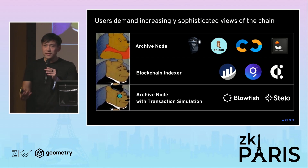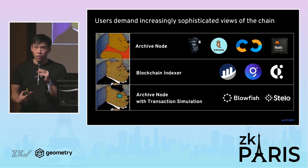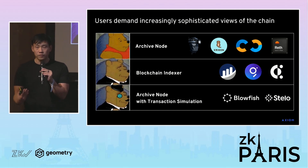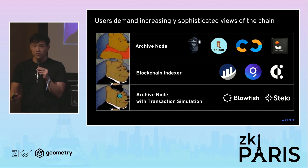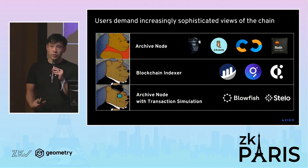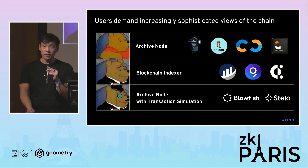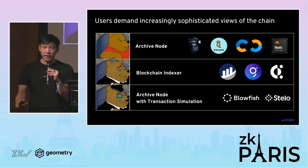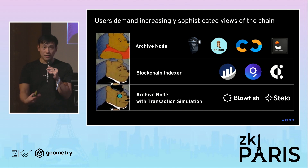As things have progressed, people demand increasingly more sophisticated ways to view this information. There are many options for archive nodes now, and there are also indexers that make the information you get from an archive node more semantically meaningful. And once you have that information, there are fancy wallets that will even simulate your transactions live against the state of the chain.